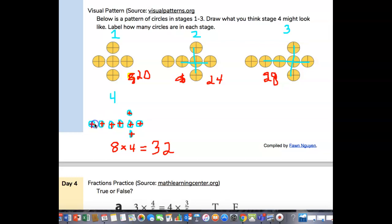That's all they asked us to do. So, that's it. Draw what you think stage four might look like, label how many circles are in each stage. See, now that's really confusing, because they said circles, not fours. But on my paper over here, it's talking about the fours. Excuse me, guys. That's it for today.